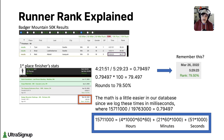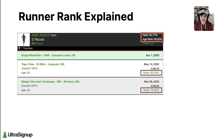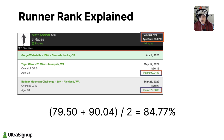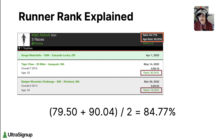Now that we have my individual race rank scores, if you add them together and divide by two to get an average — so 79.5 plus 90.04 divided by two — you get 84.77%. Everyone still with me?